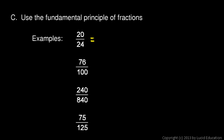First example: 20 over 24. When I look at this, I notice that those are both even numbers, and even numbers are always divisible by 2. So let's divide them both by 2: 20 divided by 2 is 10, and 24 divided by 2 is 12. Now 10 and 12 are both even again, so let's divide by 2: 10 divided by 2 is 5, and 12 divided by 2 is 6. Since 5 is prime, we can't divide further — this is reduced to simplest form.